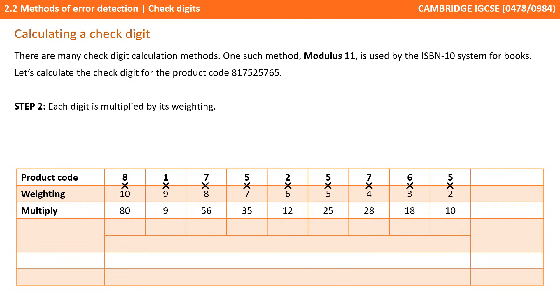We then multiply each digit by its weighting. We then add up all those multiplications together to give us a total. So in this case it's 273.